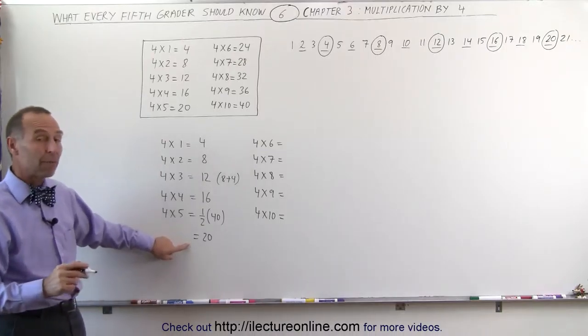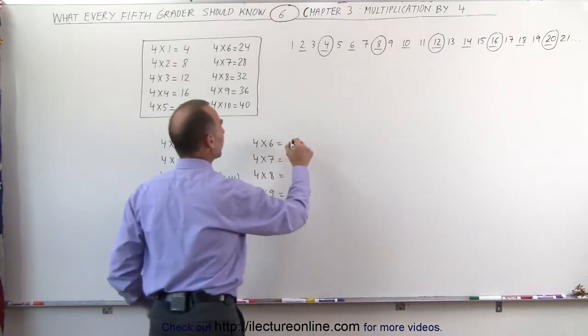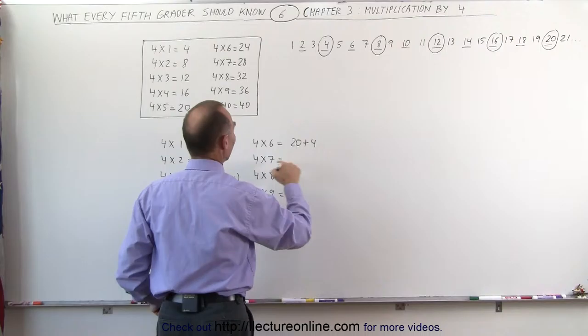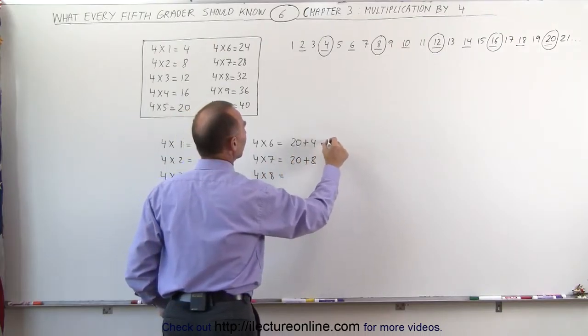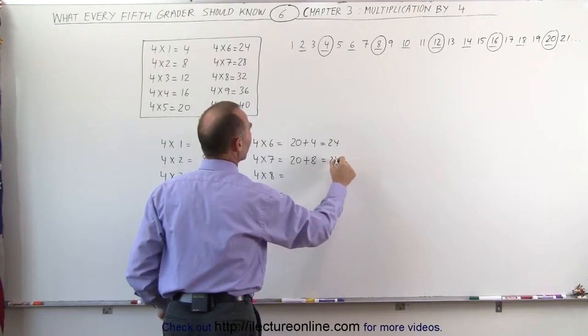4 times 6 is the halfway point, add another 4 to that. That would be 20 plus 4. And 4 times 7 would be 20 plus 2 times 4, which is 8. So this gives us 24, and this gives us 28.